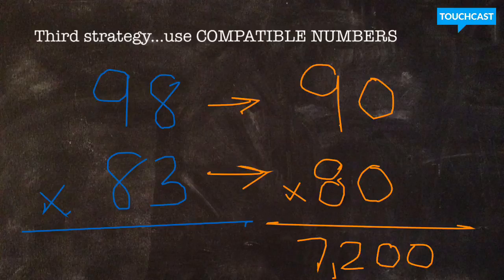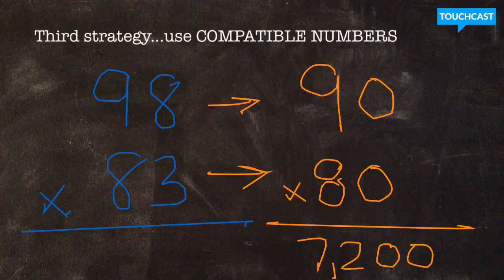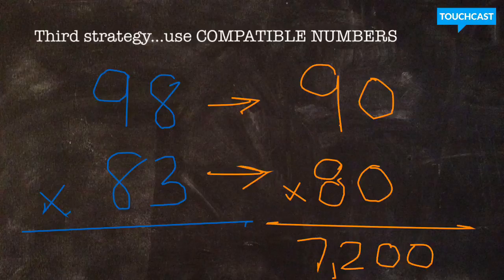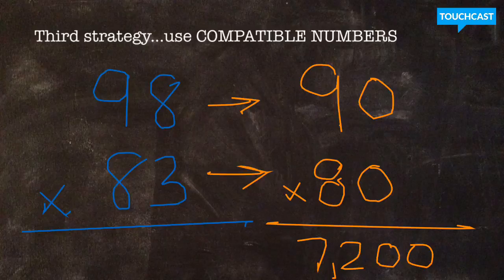So, compatible numbers is not a specific strategy that I can say round both factors, round one, round them up, round them down. What I would say to you is you have to use your knowledge of your math facts and your factor pairs that you know and round the numbers that you're multiplying, round them to factors that you can easily multiply in your head.